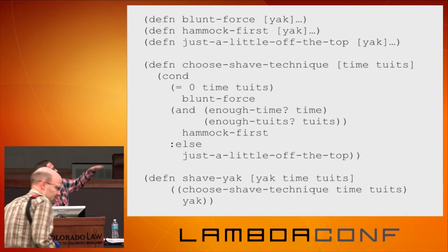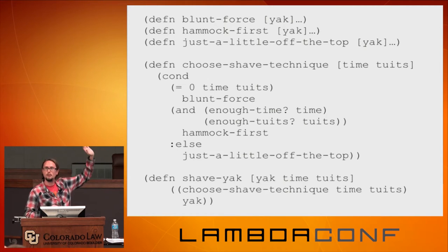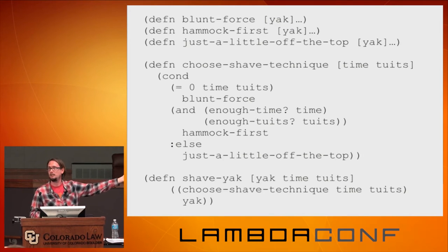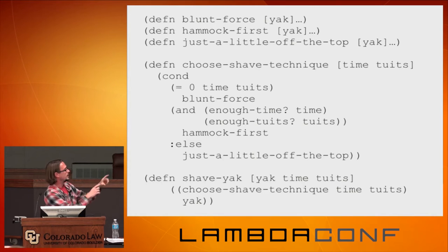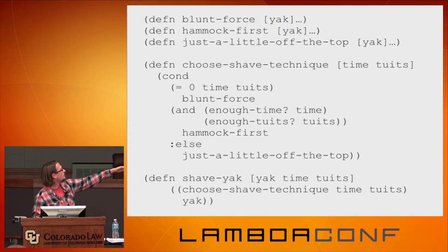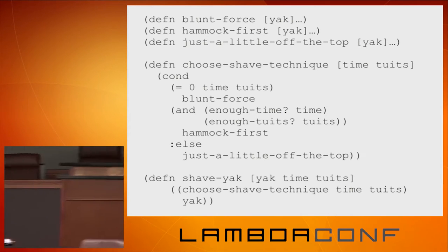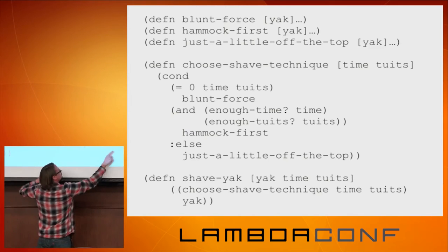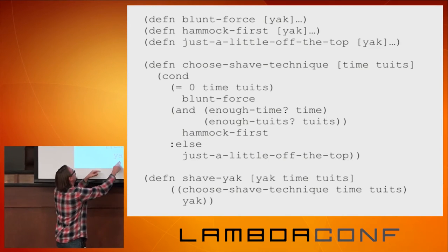If you're not familiar with reading Clojure code, it's usually best to start at the bottom and work your way up, because we have to declare things first. At the bottom we have a defn — we're defining a new function — called 'shave-yak'. As you can imagine, there might be multiple ways of shaving a yak and we might want to switch them out. The vector there defines the inputs to this function: we're going to take a yak, some time, and some tuits. Right below that, we call 'choose-shave-technique' with time and tuits, which is a function that returns a function that we then call on the yak to get the shaving done.